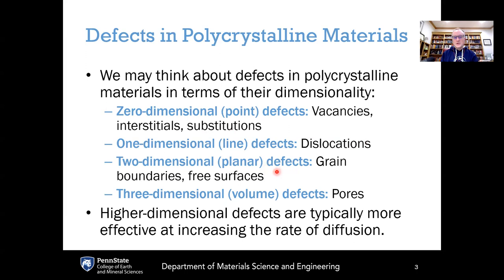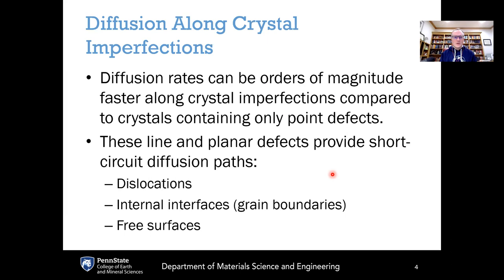If we increase the dimensionality again, we have two-dimensional or planar defects. These include grain boundaries — the surfaces in between adjacent grains — as well as free surfaces, which would be the outer surface of the material or the surface around some porosity within the material. And then finally, we have three-dimensional or volume defects, such as the porosity itself. One of the common themes here is that higher-dimensional defects are typically more effective at increasing the rate of diffusion compared to lower-dimensional defects. Point defects increase diffusion compared to a perfect crystal; dislocations are even more effective since a linear defect is like a whole line worth of defects; and grain boundaries or free surfaces are entire planes worth of defects.